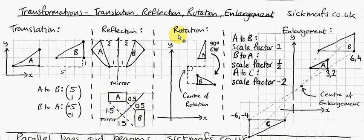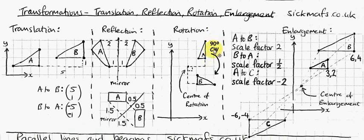Now, rotation. First of all you need to know that you're going to have a centre of rotation — basically where the shape is spinning around. If the centre of rotation is far away, you get a big circle; if it's close, you get a small circle. The other thing you need to know is what angle you're turning the shape by and which direction — so for example, 90 degrees clockwise. Here's the little trick for this technique.